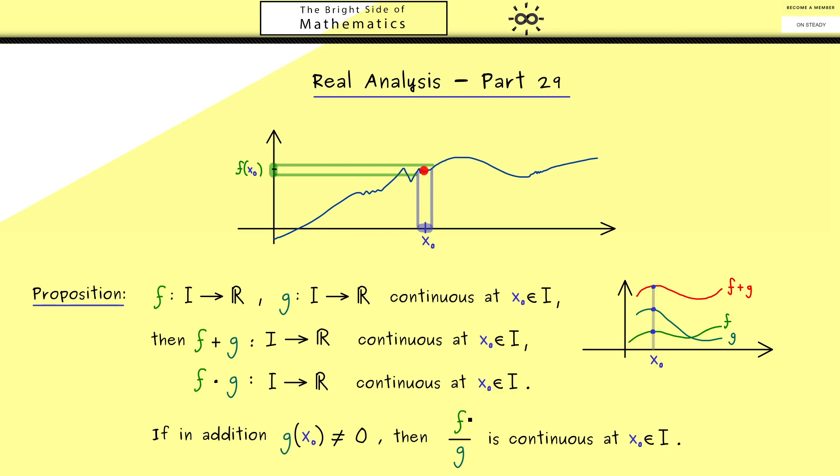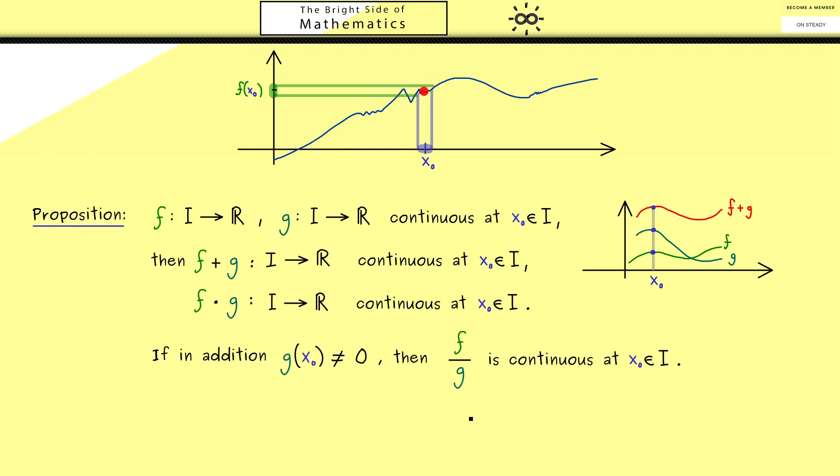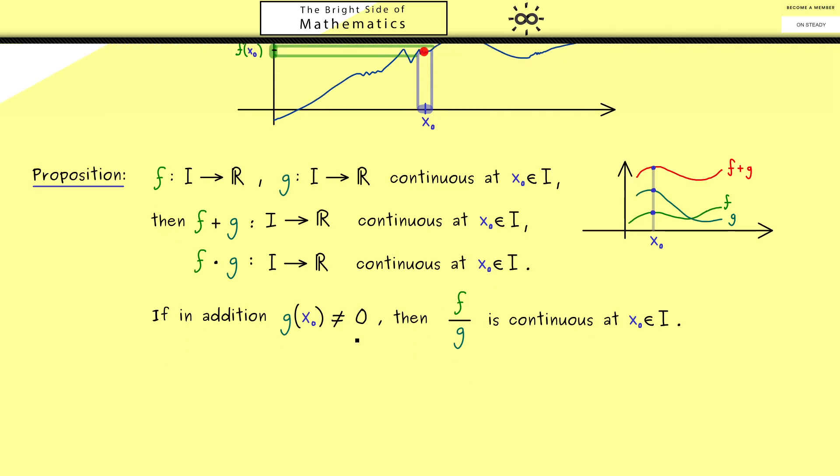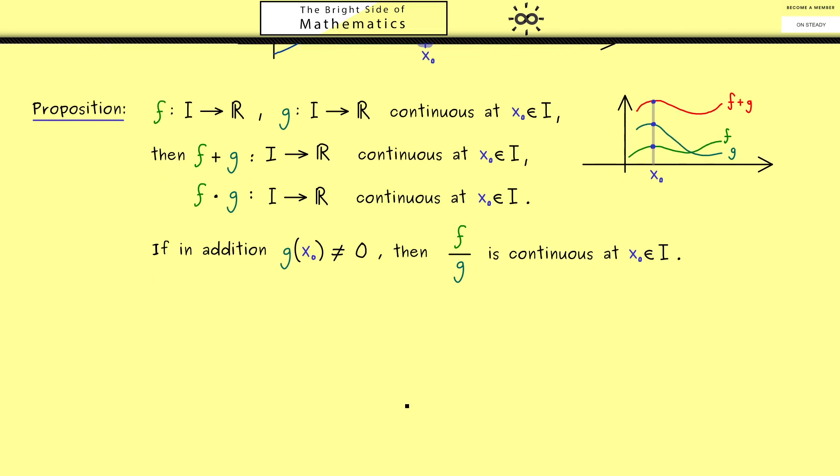This will be very helpful, therefore I advise you try to write down the proofs. Now the next combination we should analyze is the composition of two functions. Composition means we first apply one function and then the other. Usually the picture looks like this. First comes g and then comes f.